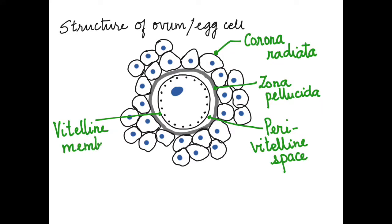Next we label the nucleus. The ovum has the haploid nucleus.